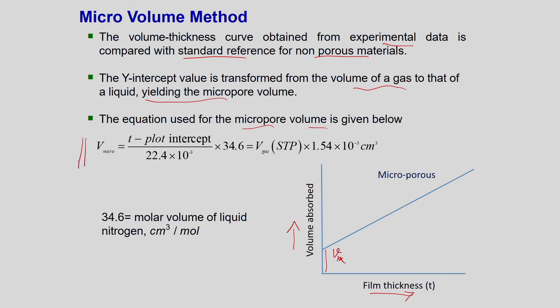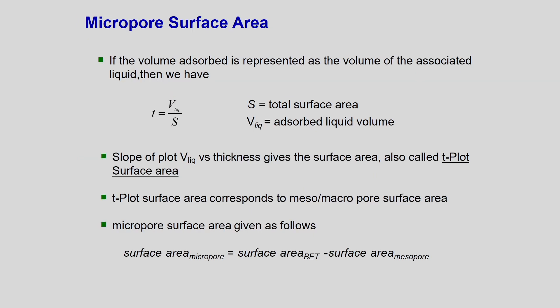The micropore volume is nothing but the monolayer volume — it is the t-plot intercept divided by the standard temperature pressure volume of nitrogen, multiplied by 34.6, which is the molar volume of liquid nitrogen. Simplified further, you get the volume of gas at STP multiplied by 1.54 × 10⁻³. From here we can also obtain the micropore surface area.